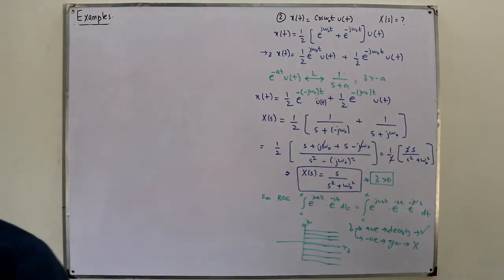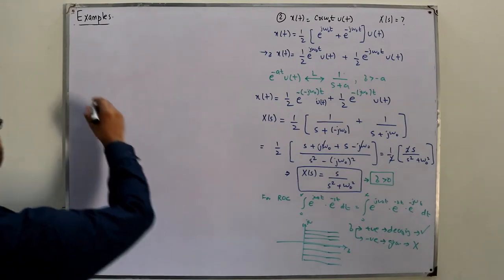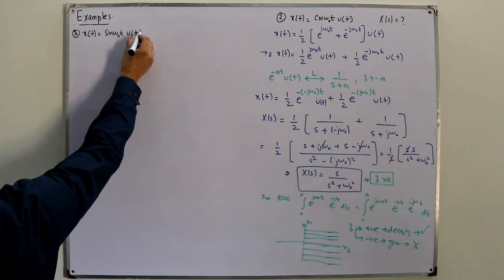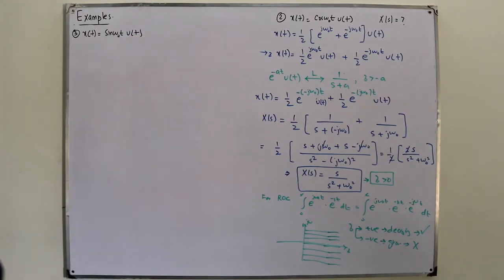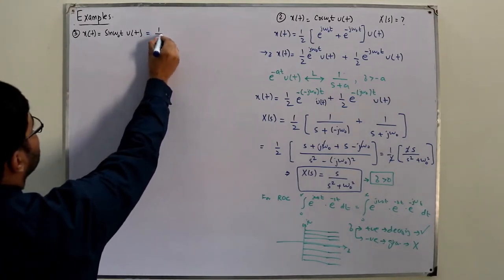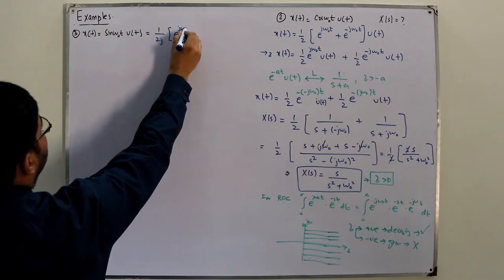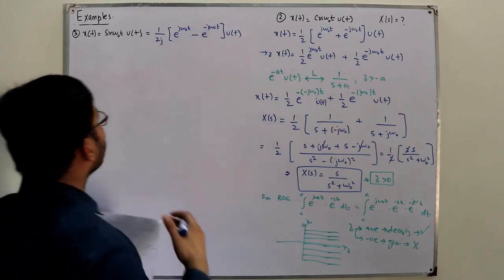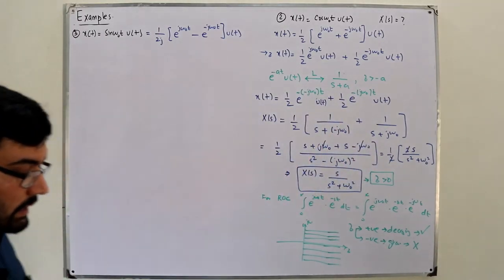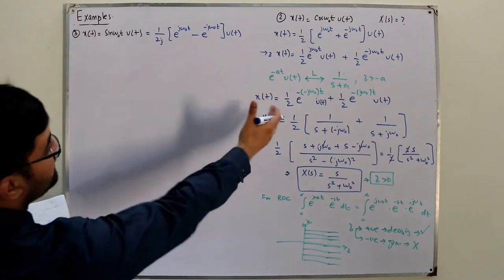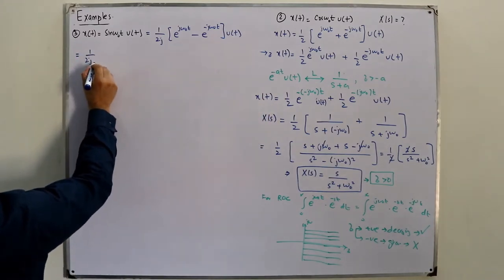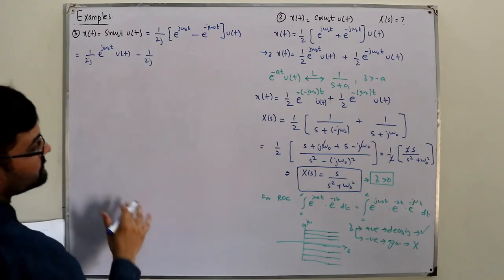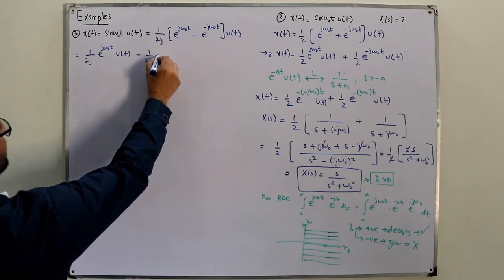Example number three: x(t) = sin(ω₀t)·u(t), and X(s) is unknown. Using Euler's relation: sin(ω₀t) = (1/2j)[e^(jω₀t) - e^(-jω₀t)]. So x(t) = (1/2j)e^(jω₀t)u(t) - (1/2j)e^(-jω₀t)u(t).